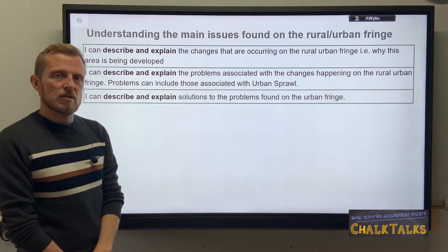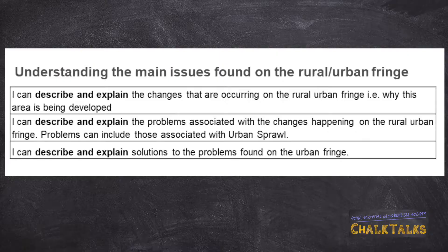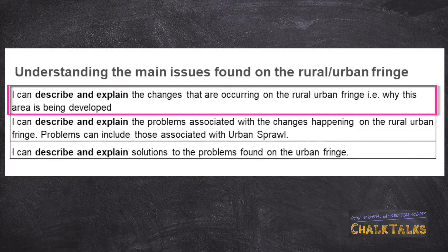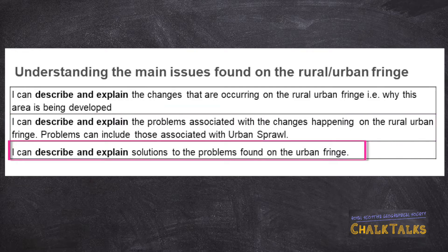In the final outcome relating to urban zones we're focusing on the rural urban fringe and issues associated with this land use zone. You must describe and explain the changes occurring there, and the problems associated with change — especially linked to urban sprawl, which is the uncontrolled outward growth of cities. The final learning outcome focuses on different solutions and ways that the spreading of the city can be managed, and is often found as a map question requiring map evidence.